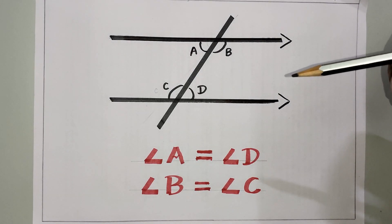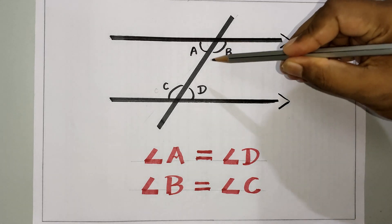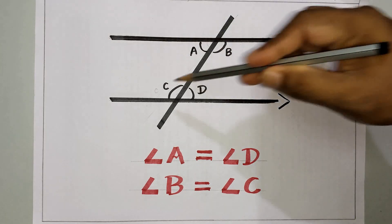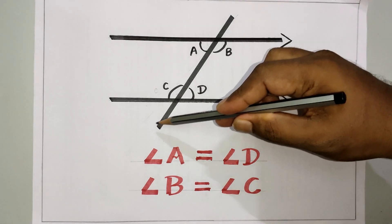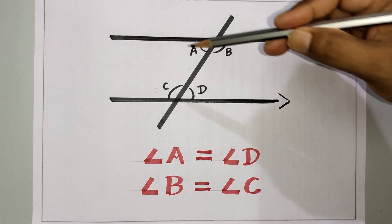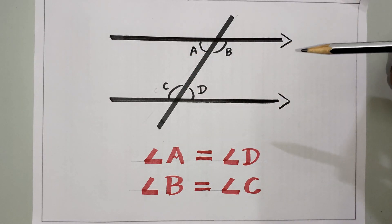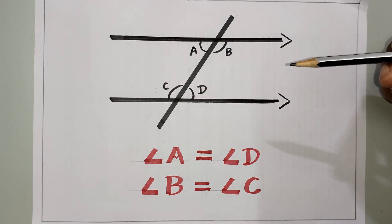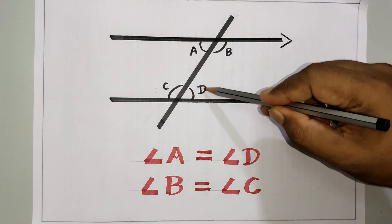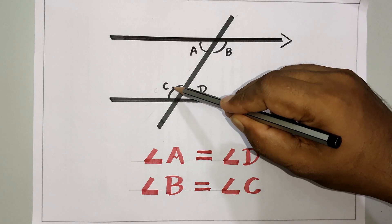For the derivation we need two mathematical rules. First: alternate interior angles. Second: the exterior angle of a triangle. By the alternate interior angles rule, angles formed inside two parallel lines intersected by a transversal are equal to their alternate pairs — angle A equals angle D, and angle B equals angle C.